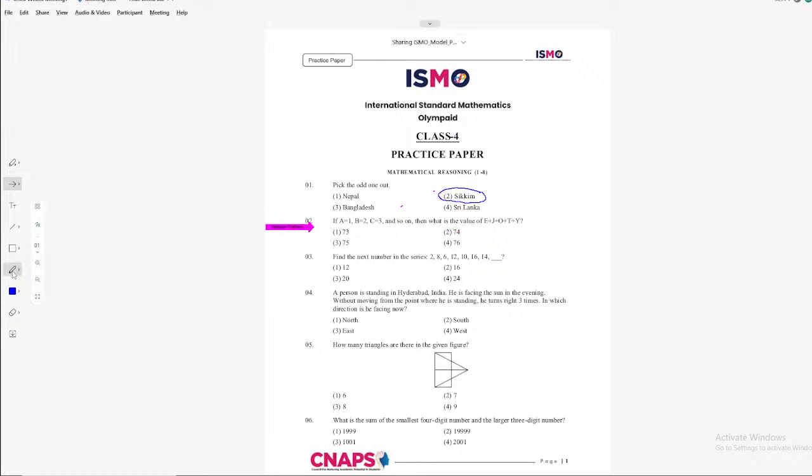So let's find out the number for E. In the same order, it is 5, J is 10. What is O? 15. T is 20 and Y is 25. Now when I add them, 15 plus 15, 30. 30 plus 20, 50. 50 plus 25, 75 is the answer which is option 3. I hope you are following students.